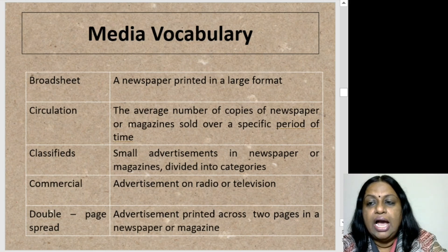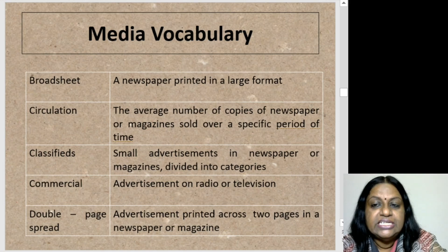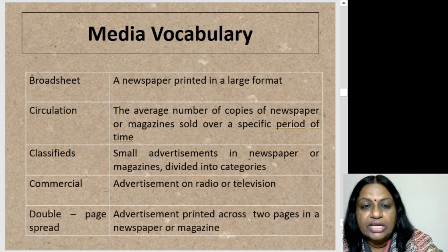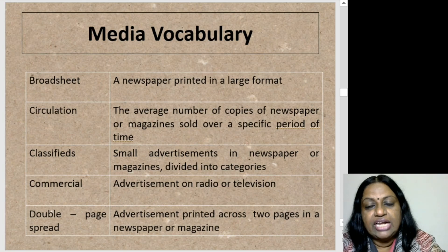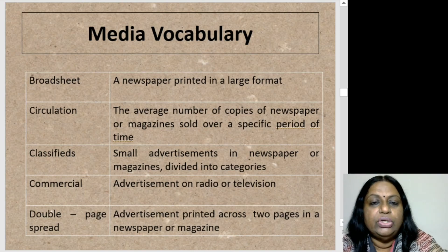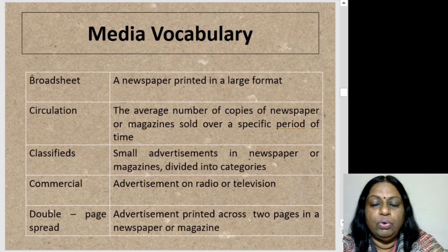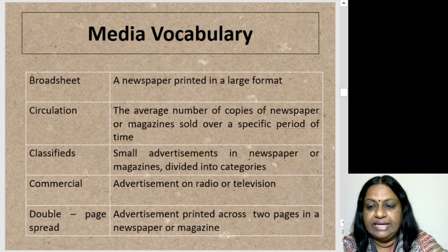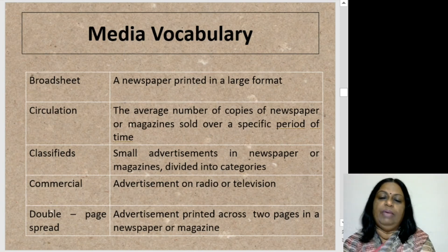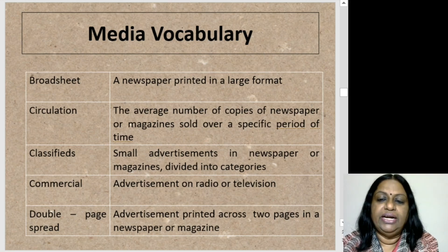Broadsheet: a newspaper printed in a large format. Circulation: the average number of copies of a newspaper or magazine sold over a specific period of time — for example, what is the circulation of The Hindu or Inadu? Classifieds: small advertisements in the newspaper or magazine divided into categories. Commercial: an advertisement on radio or TV. Double page spread: an advertisement printed across two pages in the newspaper or magazine.